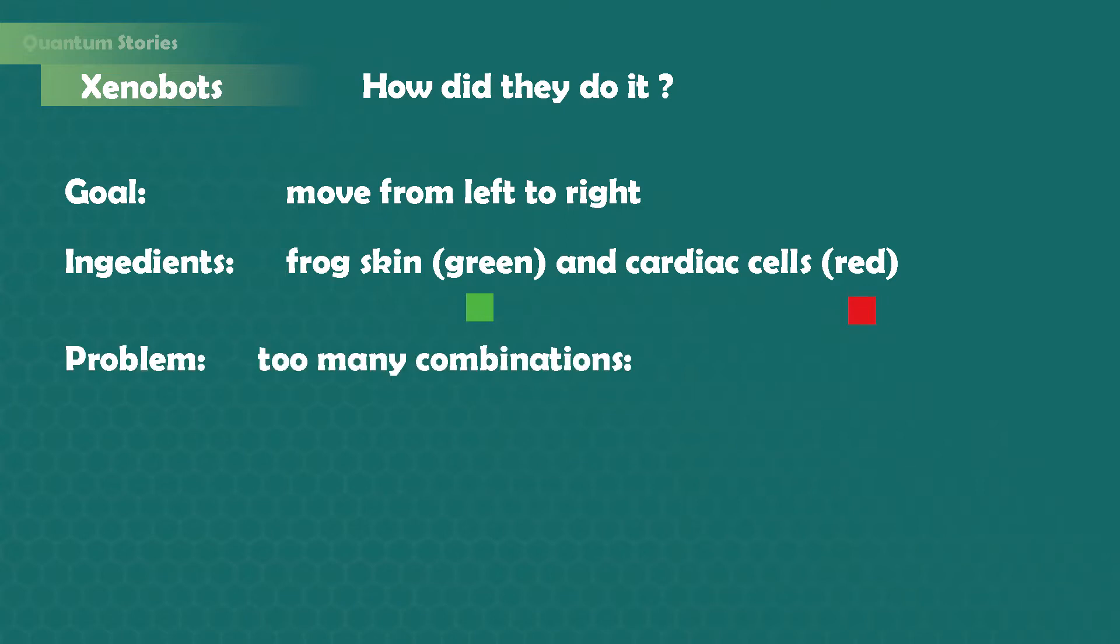Now the question is how will we combine these two types of cells. There is in fact not a single solution. We could combine them in very different ways. Let's start with a very basic example. Suppose we want to make a robot with two by two cells. Well, we have four different positions and for each of these positions, you can choose between two cells. This makes a total of 16 possible solutions.